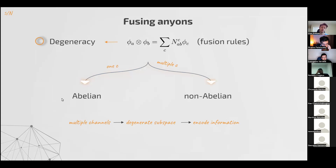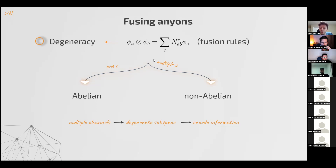This degeneracy can also be understood in terms of the fusion rules of anyons. If we have two anyons — Φ_A and Φ_B — they can fuse and give different outcomes. If there is a single outcome, we're talking about abelian anyons. But if there are multiple outcomes, we're talking about non-abelian anyons. It's these multiple channels in the non-abelian case that help us create the degenerate subspace, encode information, and construct the qubit.